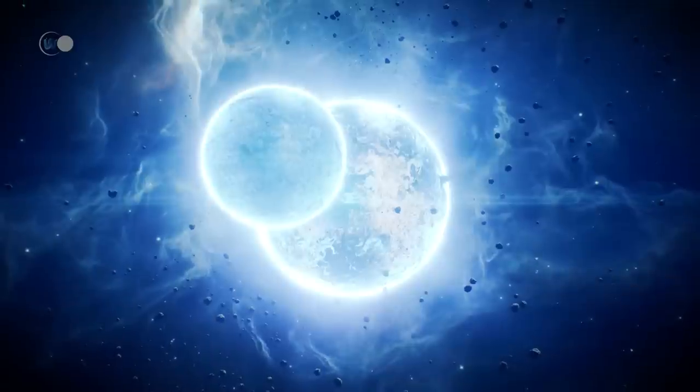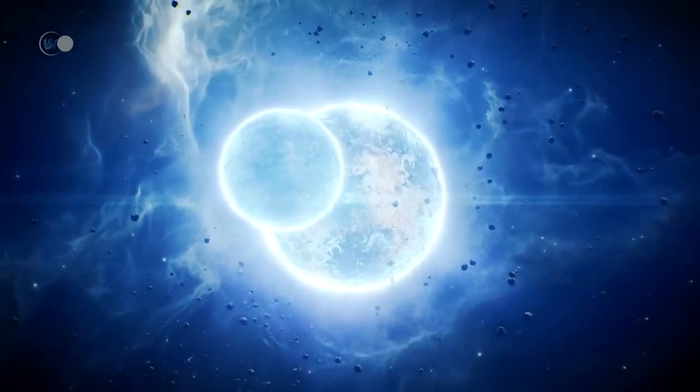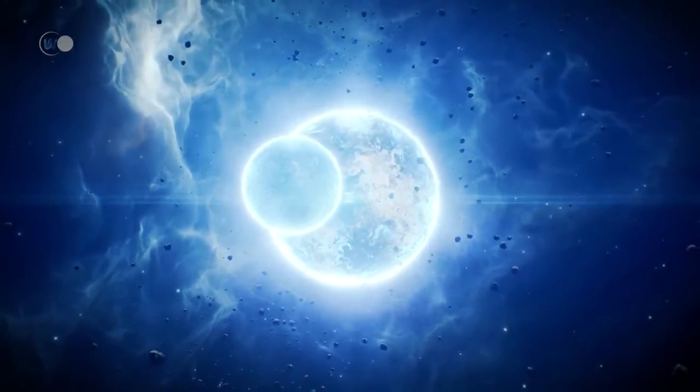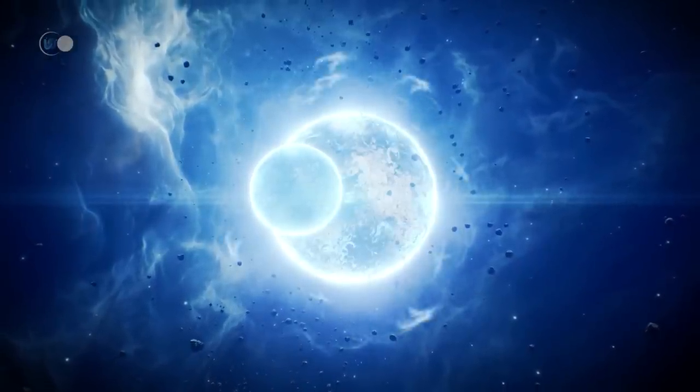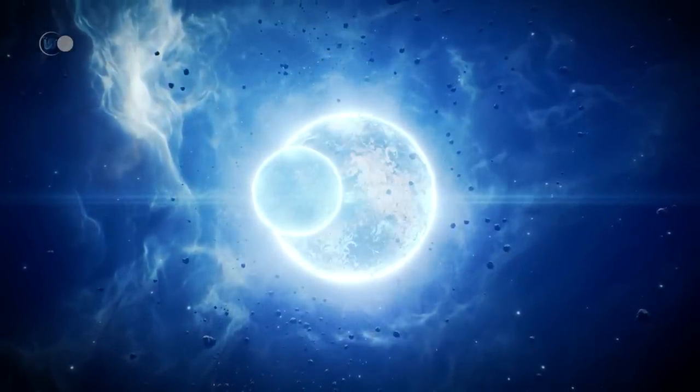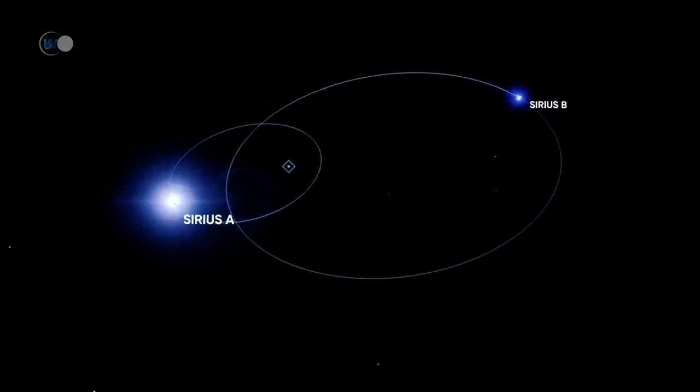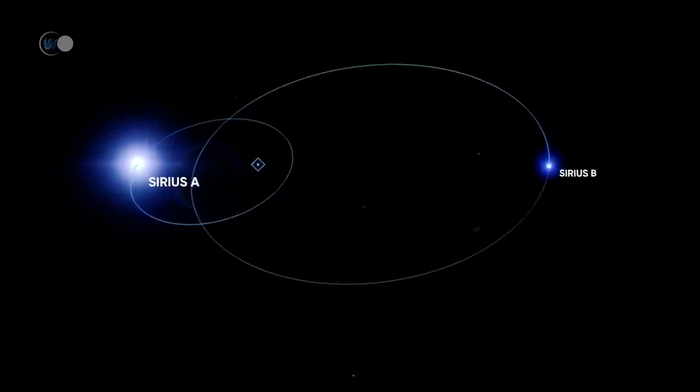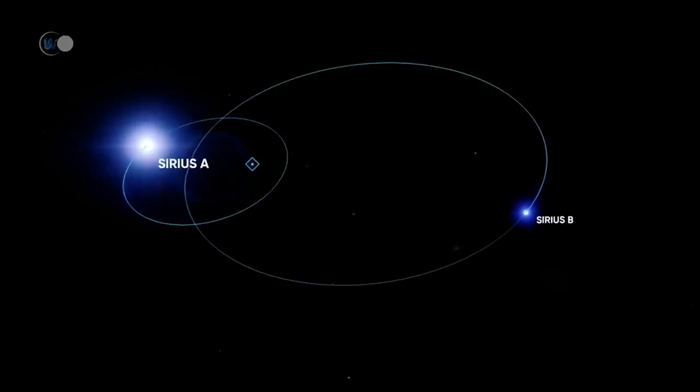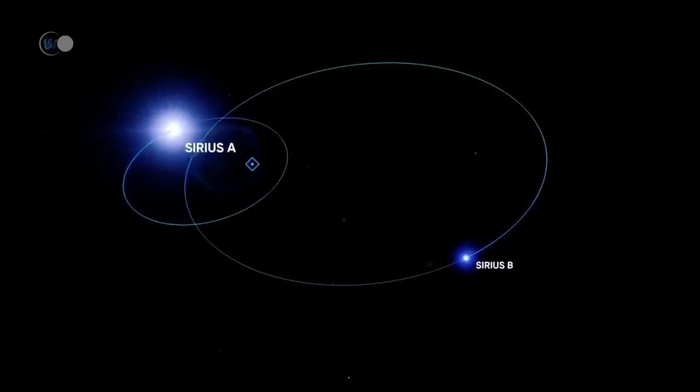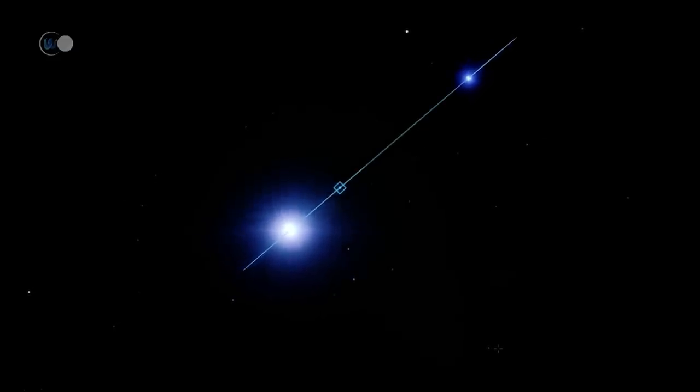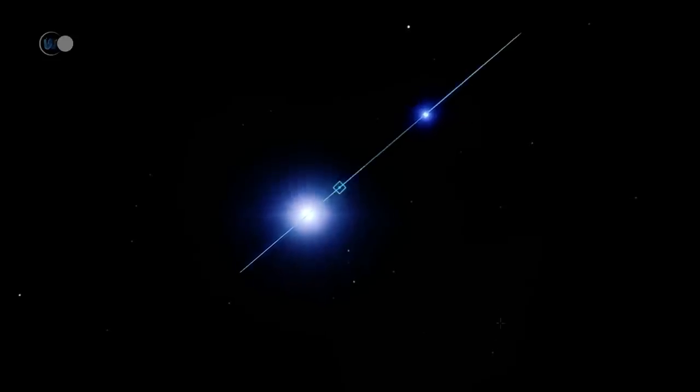Separated from the main star by an average of 19.5 astronomical units, or 19.5 times the distance between the Earth and the Sun, it orbits around it over a period of 50 years. Because of a strongly marked elliptical orbit, the distance between these two stars can vary from 8.1 to 31.5 astronomical units. This maximum distance will soon be reached by 2024 to 2025, while the next passage at the periastron of the system, i.e. the moment when the two stars will be the closest, is planned for 2044.